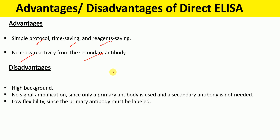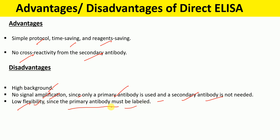What are the disadvantages of direct ELISA? High background, no signal amplification, since only a primary antibody is used and a secondary antibody is not used, the signal is not amplified. There is also low flexibility, since the primary antibody must be labeled with the enzyme.